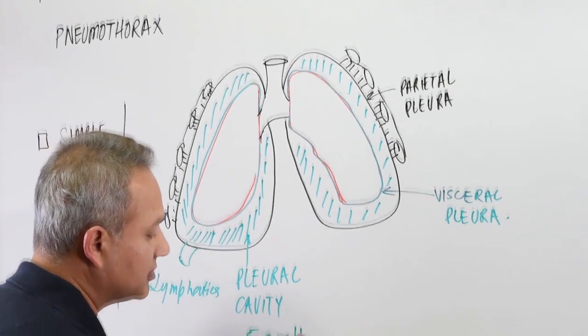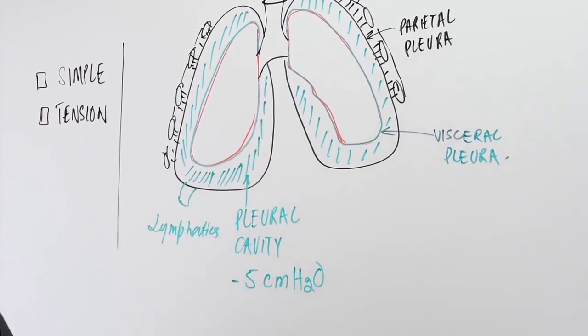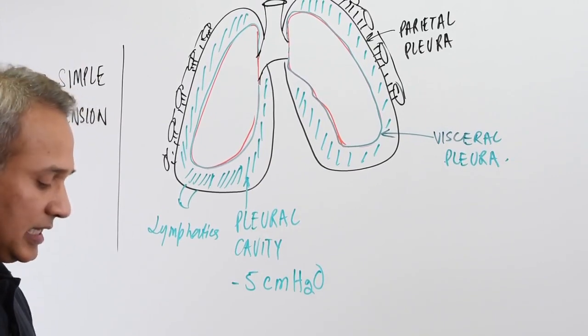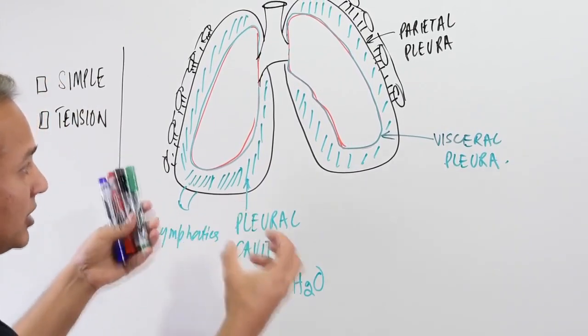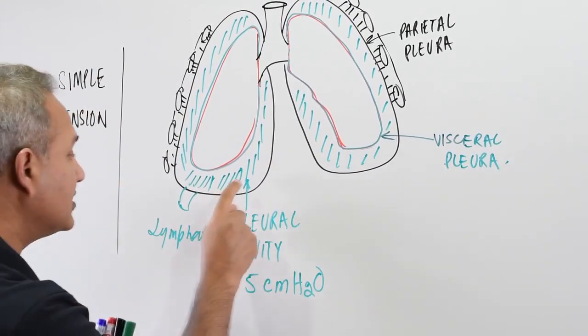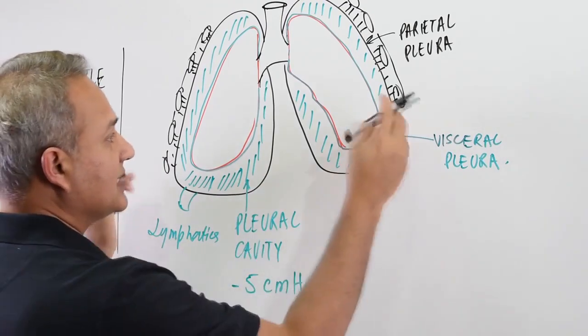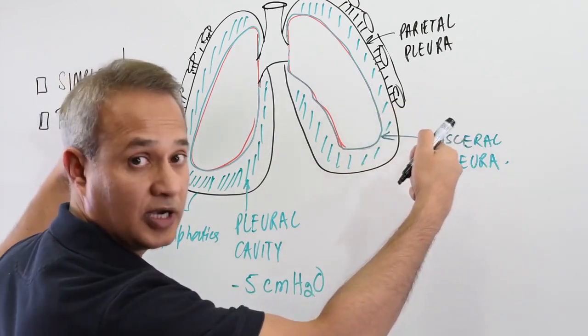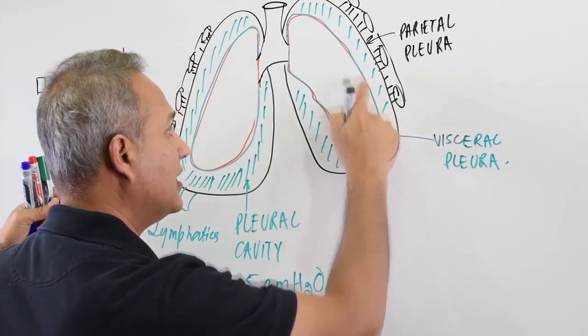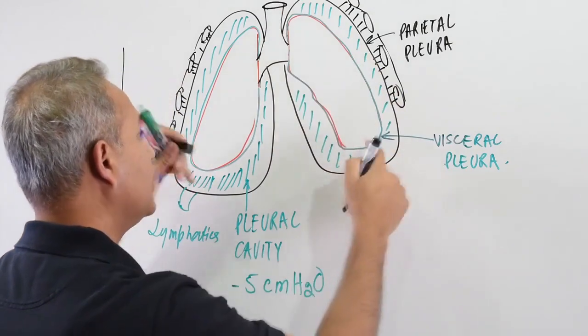Now lungs are pulled out because of this minus 5 centimeters. So what happens is chest cavity pulls the parietal pleura out, parietal pleura exerts pressure on the fluid in here and tries to suck the fluid outwards.